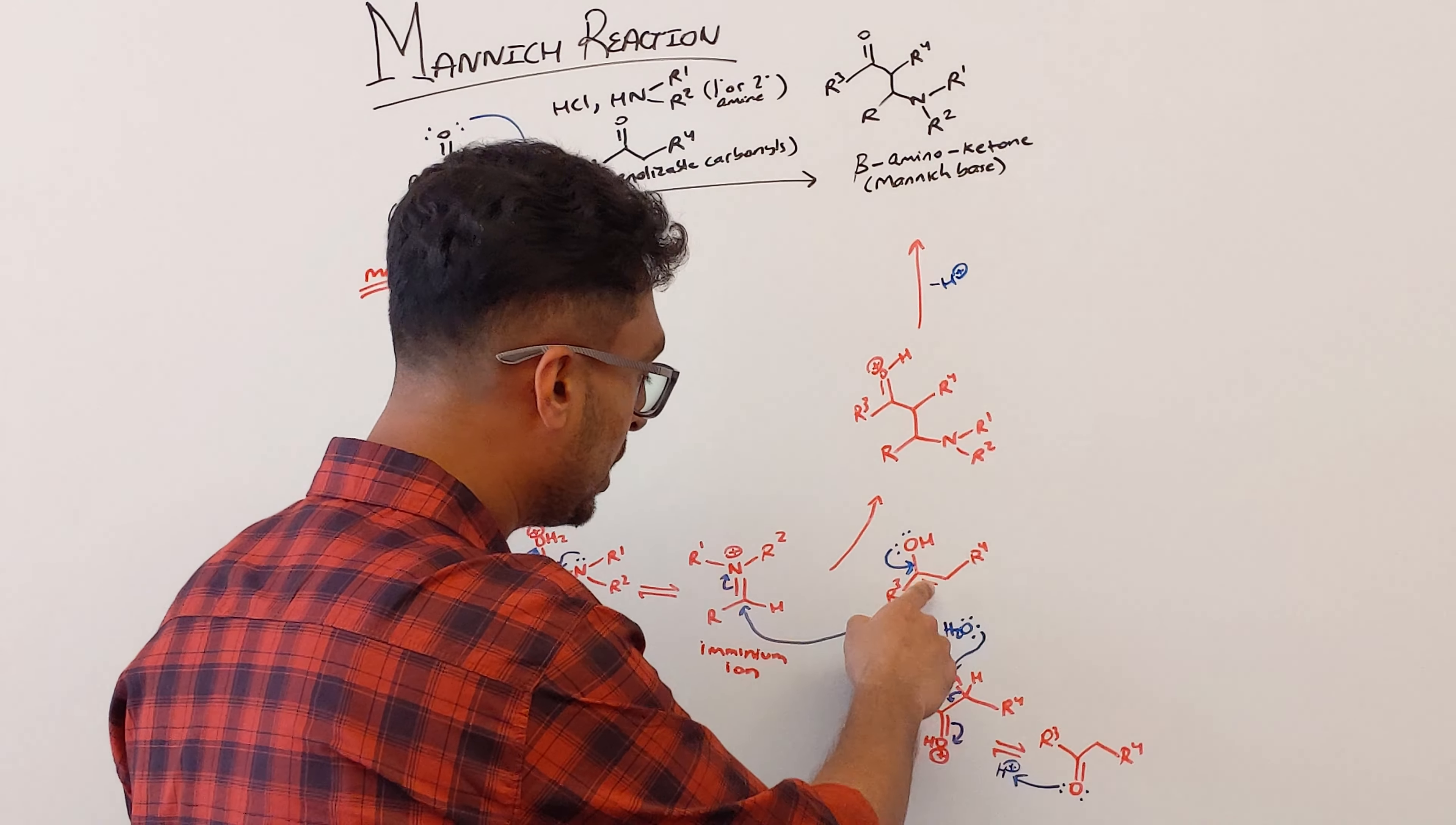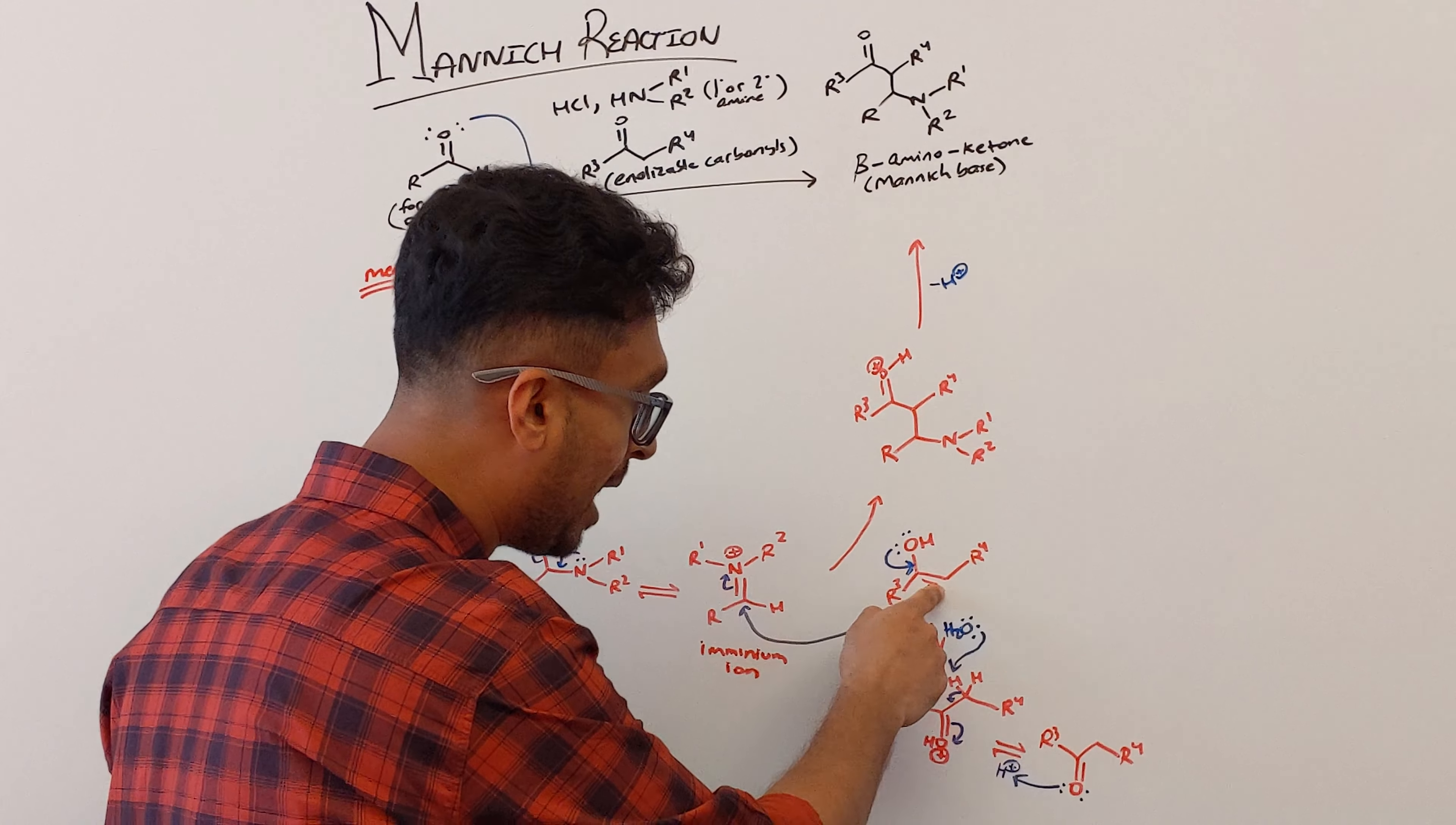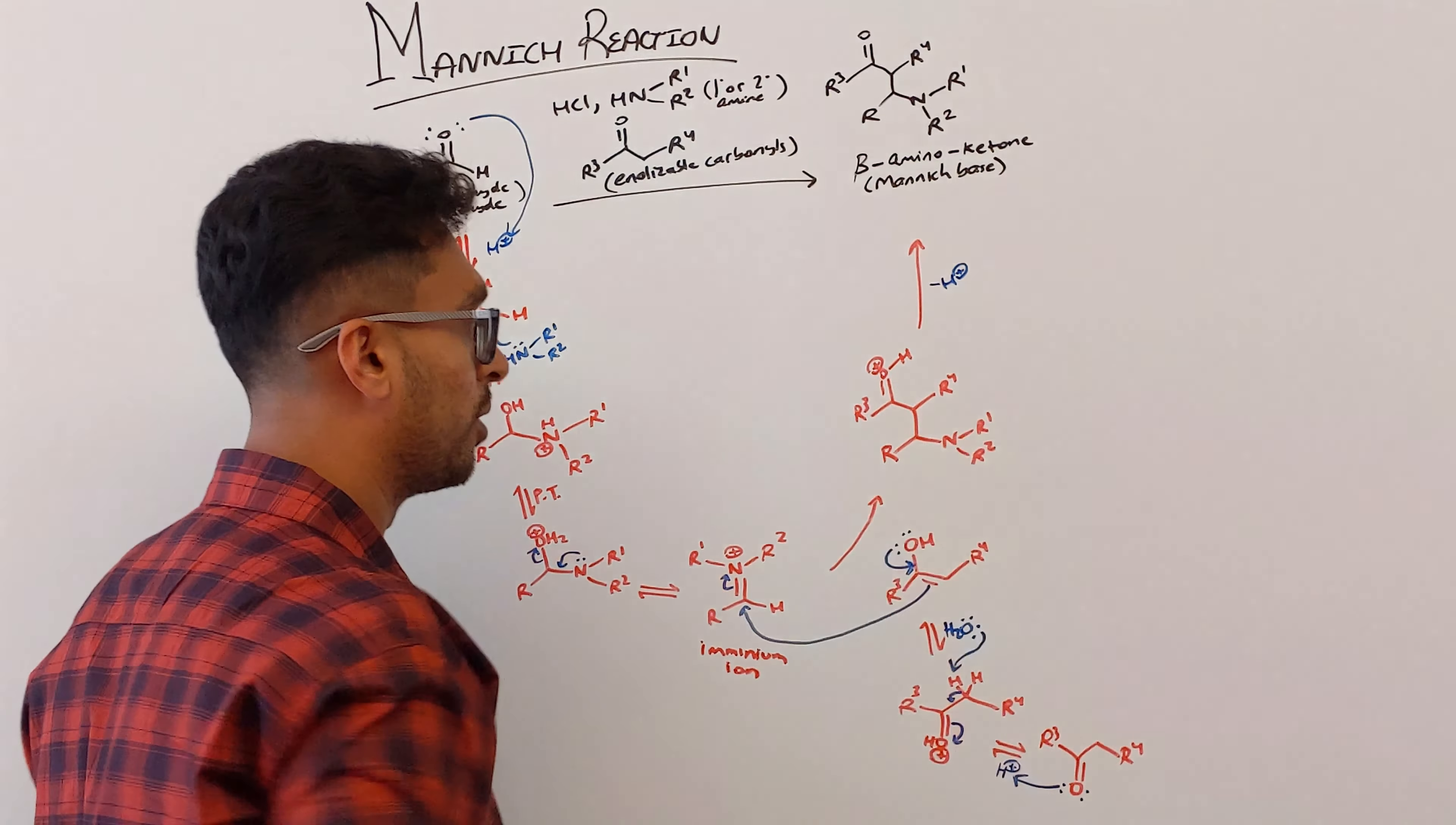Your enol is going to now act as a nucleophile and we all know that in order to activate the enol, that electron density has to come down and the pi bond attack is going to happen on this iminium ion and that electron density is now going to be pushed towards that nitrogen. So you form this compound right here.